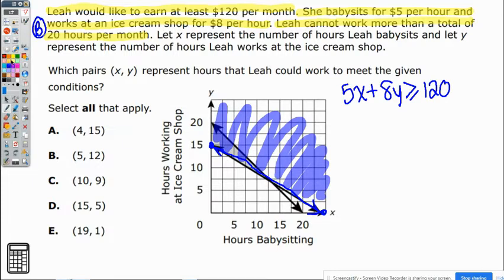The other equation we had was that she cannot work more than 20 hours. So X hours for babysitting plus Y hours for the ice cream shop cannot exceed because she cannot work more than 20 hours a week. And if you found the X intercepts, that was at 0,20, and that was at 20,0. And if you were to shade it, it would be shaded downward. So let me show you what that looks like.